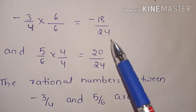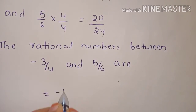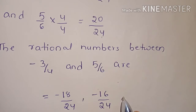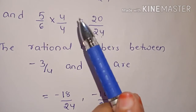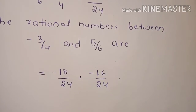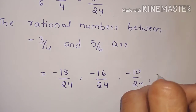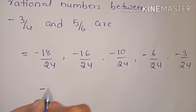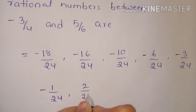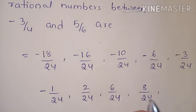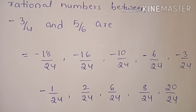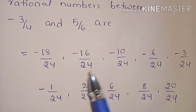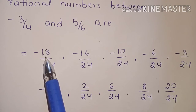The 10 rational numbers between minus 18 by 24 and 20 by 24 are: minus 16 by 24, minus 10 by 24, minus 6 by 24, minus 3 by 24, minus 1 by 24, 2 by 24, 6 by 24, 8 by 24, and 20 by 24. These are the 10 rational numbers between minus 3 by 4 and 5 by 6.